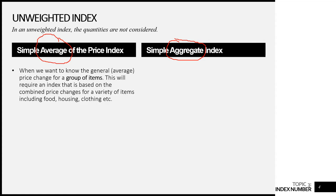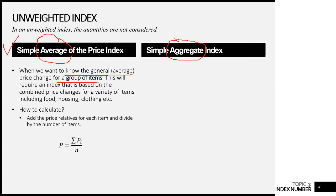We use the simple average of the price index when we want to find the average price changes for a group of items. In example one, there was only one item — statistics books — so we used the simple price index. But if we want to find the average change across a group of items like stats books, math, micro, macro, and accounting, we use the simple average of the price index. The formula: sum all the price indexes of each item and divide by the number of items.